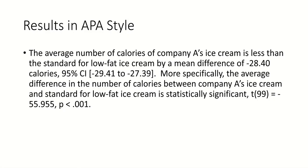Here is how the results would look: The average number of calories of Company A's ice cream is less than the standard for low-fat ice cream by a mean of negative 28.40, with a confidence interval of negative 29.41 to negative 27.39. If resampled over and over, our values would fall within those two values, and we are confident that 95% of the time that would happen. More specifically, the average difference in the number of calories between Company A's ice cream and the standard for low-fat ice cream is statistically significant, with a p-value less than 0.001.